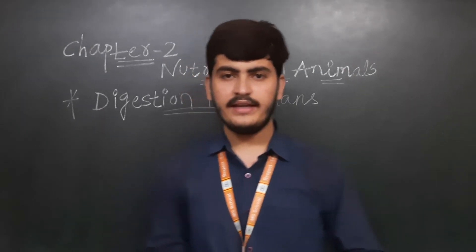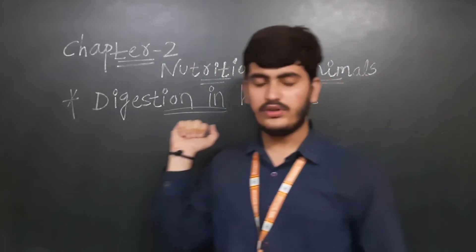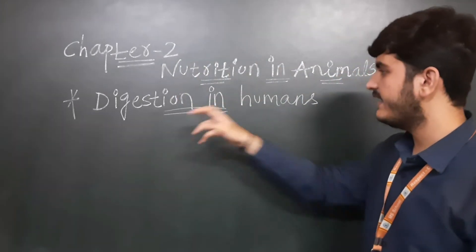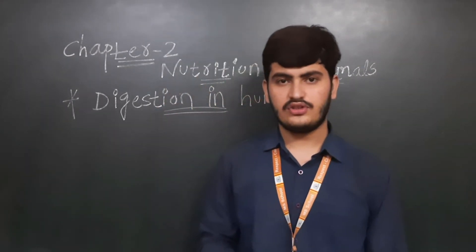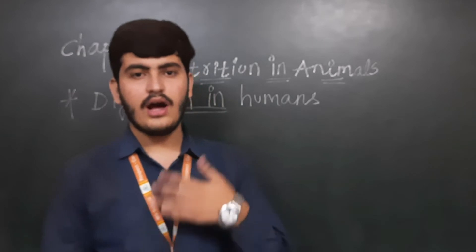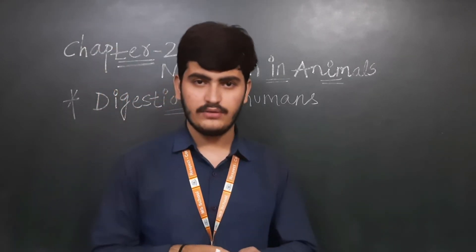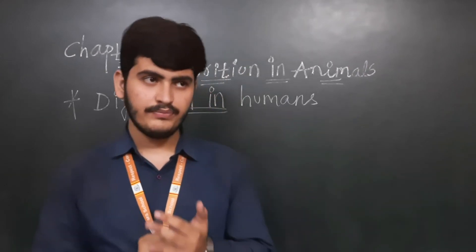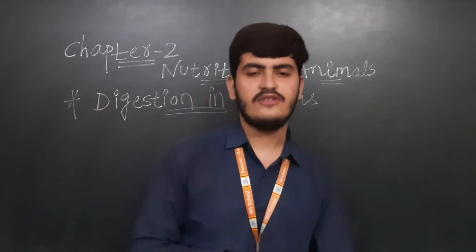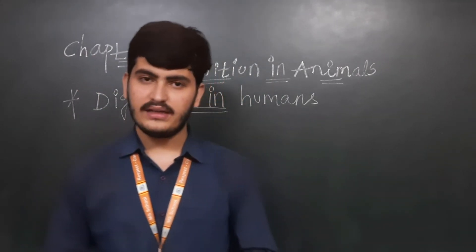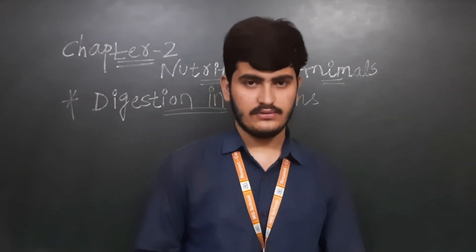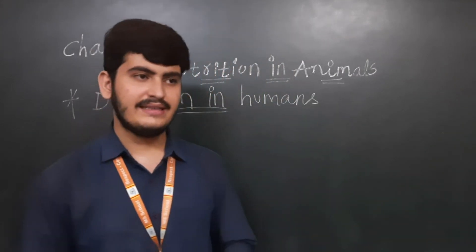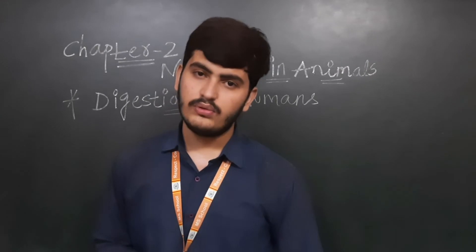Good morning students, welcome back again to our channel. Same chapter: second, nutrition in animals. In that we have started the topic digestion in humans — how the digestive system works in our body. So you have seen all the different parts: buccal cavity, salivary gland, esophagus, liver, pancreas, small intestine, large intestine, rectum, and anus. These are the different compartments included in the digestive system.